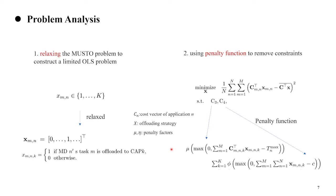To reformulate the problem in the form of ordinary least squares, the offloading decisions must take binary values. Nevertheless, the offloading decisions may not be integer vectors under matrix operations. Therefore, we first relax the offloading decisions and replace the offloading decision variable with a one-hot type representation, which can also represent the inherent attributes of an offloading state.